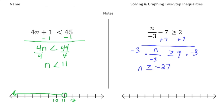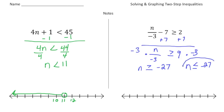But I'm not done, and this is why. Remember the golden rule with inequalities: if you multiply or divide both sides of the inequality by a negative, you have to flip the sign. So this is actually going to end up as n less than or equal to negative 27.